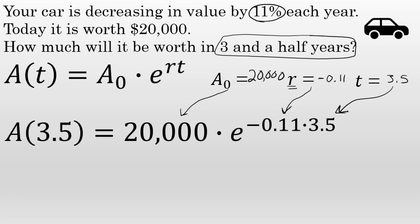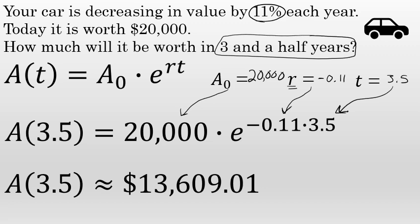This becomes a calculator exercise. Using a calculator, we'll take 20,000 times e to the power of -0.11 times 3.5, and that will give us a result of about $13,609.01 if we round it off to the nearest two decimal places to represent dollars and cents.